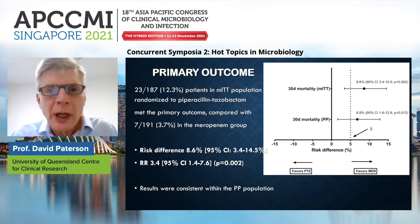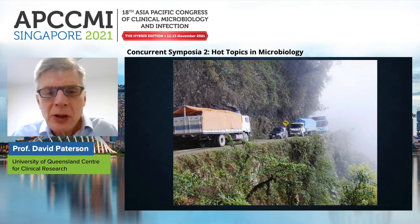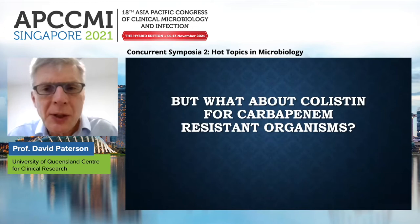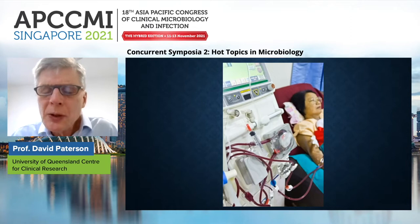Of course, a consequence of increased carbapenem use is increased carbapenem resistance. If a person is critically ill — like going along the road of death in Bolivia — and encounters an infection with a carbapenem-resistant organism, the chance of succumbing to that infection is incredibly high. Many of you will be familiar with using colistin for carbapenem-resistant organisms. Unfortunately, carbapenem resistance treated with colistin is frequently associated with nephrotoxicity, and therefore we've been searching for alternatives.